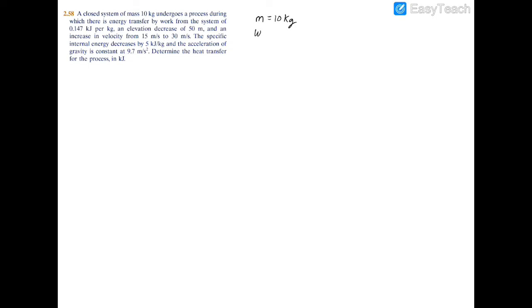This is another example of the first law of thermodynamics. We have a closed system with m equals 10 kilograms, and work done by the system equal to 0.147 kilojoules per kilogram — that's on a per unit mass basis. The elevation decreases 50 meters, so Z2 minus Z1 equals negative 50 meters, because it's a decrease in elevation, meaning you have less height at Z2 than at Z1.